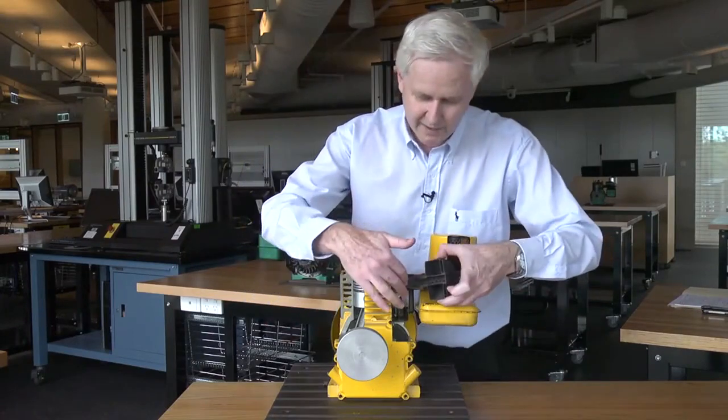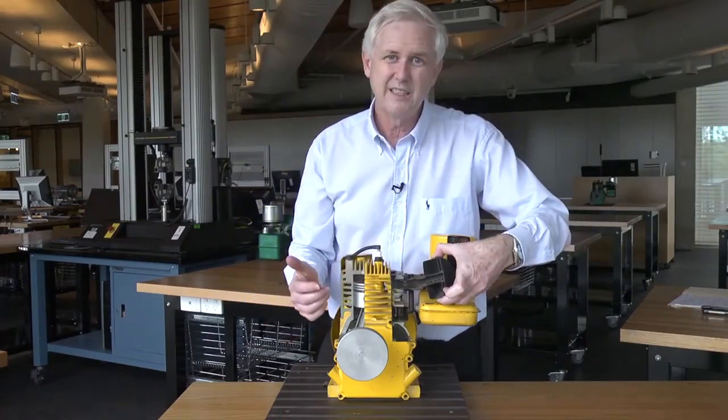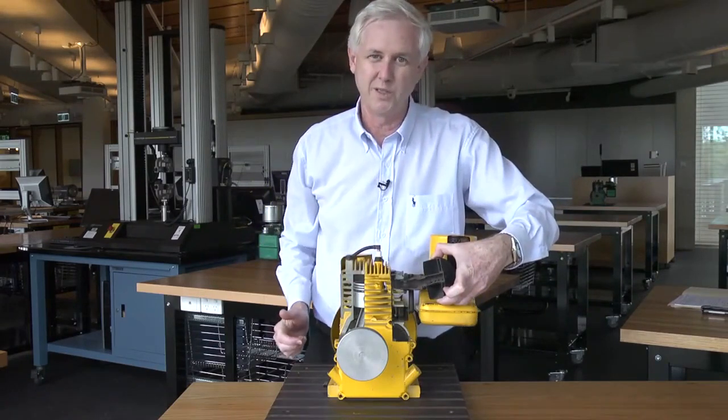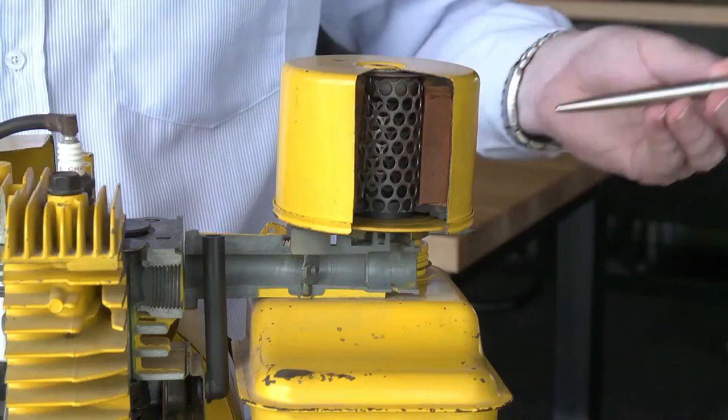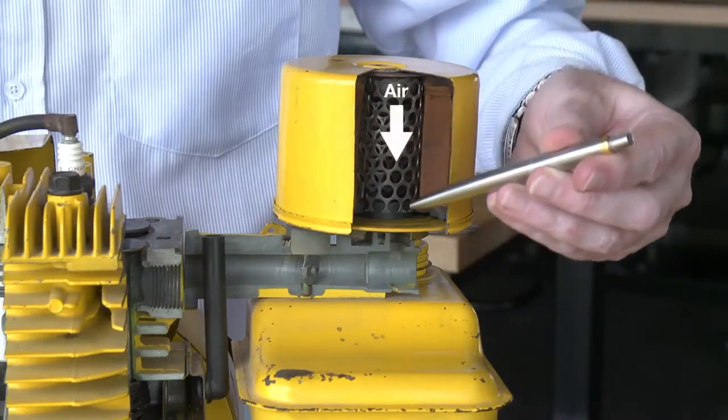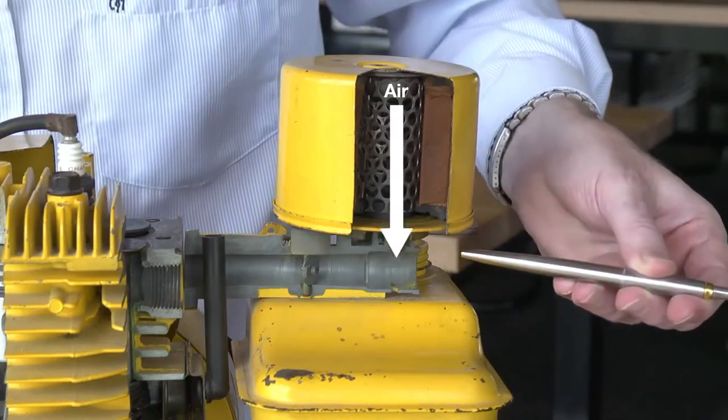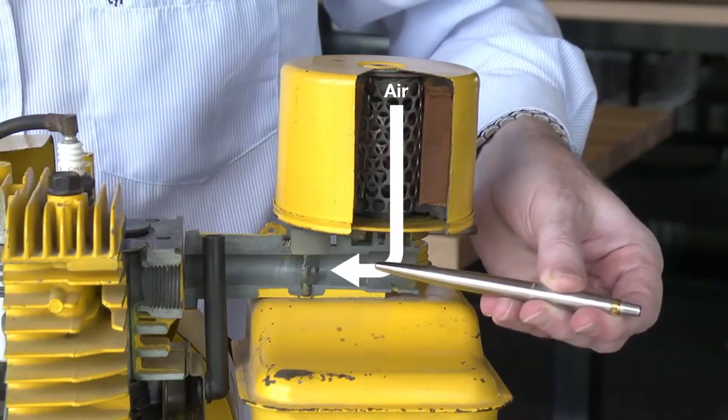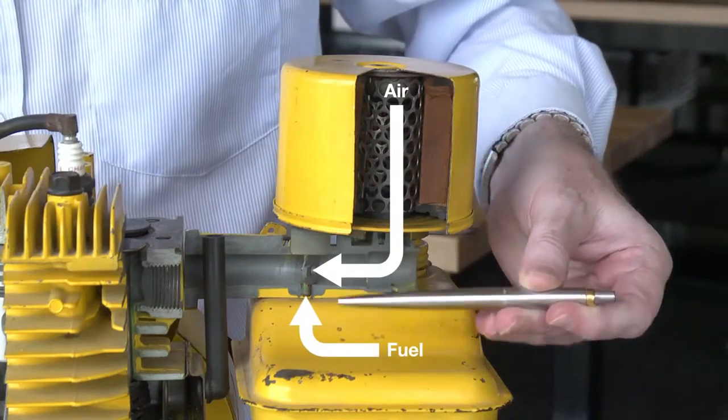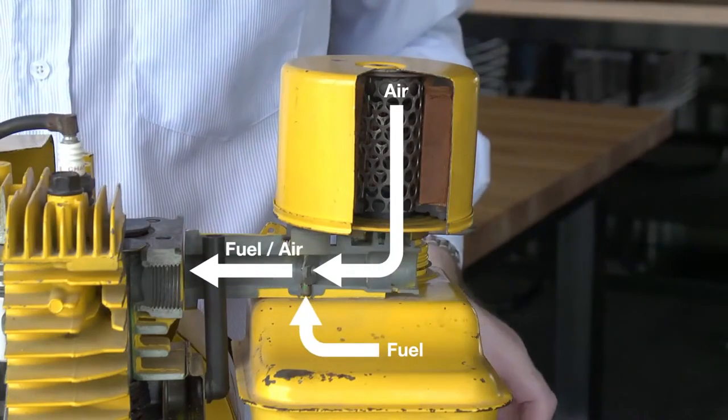The exhaust would be connected to this section here and would flow through the exhaust system. The air that's going to burn with the fuel enters the engine through the air intake. It then passes along a venturi where fuel is sucked up and mixed with the air before it enters into the engine.